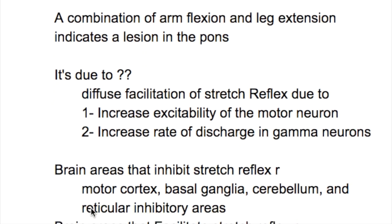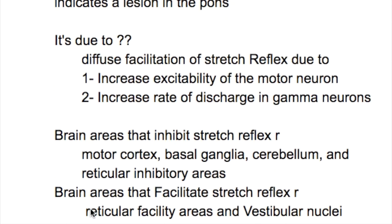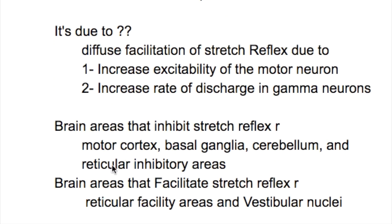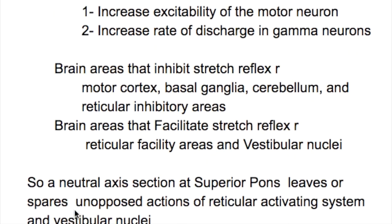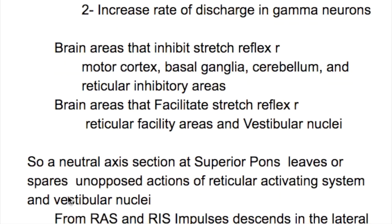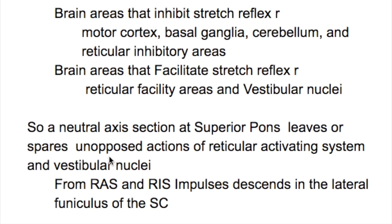Brain areas that inhibit the stretch reflex are the motor cortex, corticospinal tract, basal ganglia, cerebellum, and reticular inhibitory areas. Brain areas that facilitate the stretch reflex are the reticular activating or facilitatory areas and the vestibular nuclei. A neural axis section at the superior pons leaves the unopposed action of the reticular activating system and vestibular nuclei.